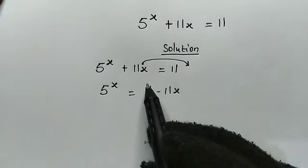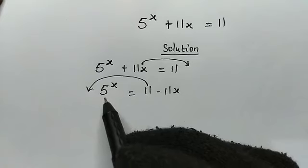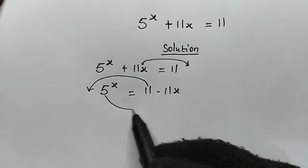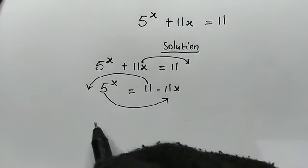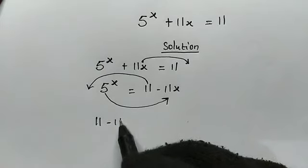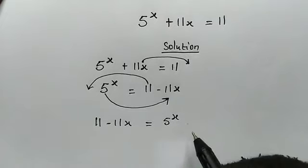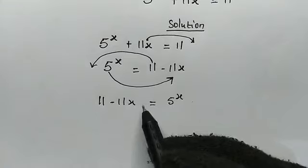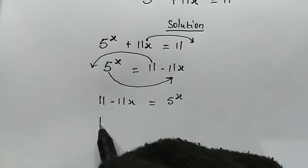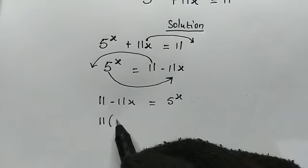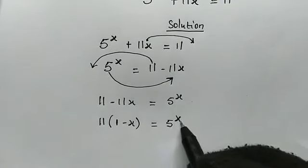Now let's make the left-hand side of this equation to be the right-hand side and the right-hand side to be the left-hand side. So moving this to this side, we have 11 minus 11x equal to 5 to the power of x — no sign change. Now from here, 11 is common so let's factor it out. So we have 11 times bracket 1 minus x, and this is equal to 5 to the power of x.